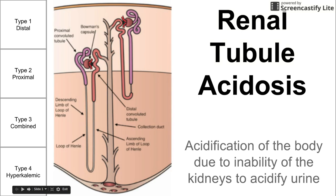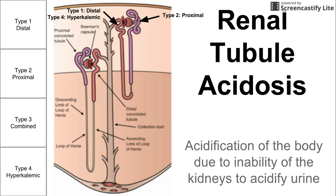Of the four types of renal tubular acidosis, some occur in different parts of the nephron. Types 1 and 4 both occur in the distal convoluted tubule, whereas type 2 occurs in the proximal convoluted tubule, and we've labeled those on the nephron. Type 3 is actually a condition where there's combined type 1 and type 2, so it shows symptoms related to both the distal and proximal tubule.